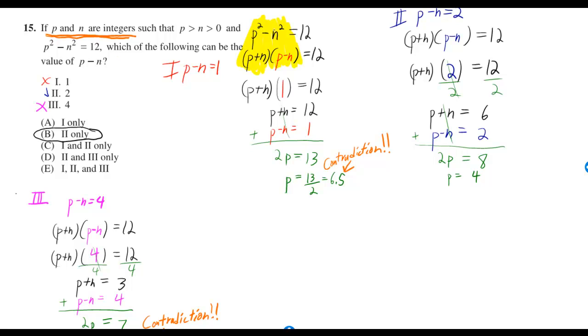The first thing I did is called the difference of squares. p squared minus n squared is equal to p plus n times p minus n. You could FOIL to check that. But that gives us p plus n times p minus n is equal to 12.